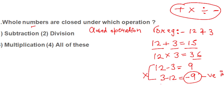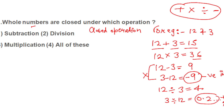Similarly for division: 12 divided by 3 is 4, a whole number, but 3 divided by 12 gives 0.25, which is not a whole number — so division is also not justified. Therefore, whole numbers are closed under addition and multiplication. If both are in the options, your answer is both, but since only multiplication is mentioned here, your answer will be multiplication.